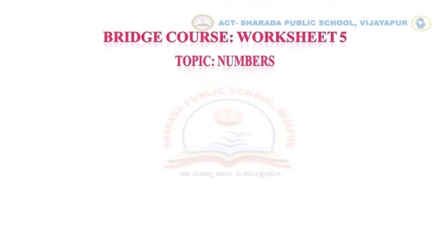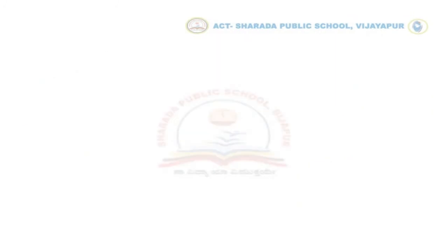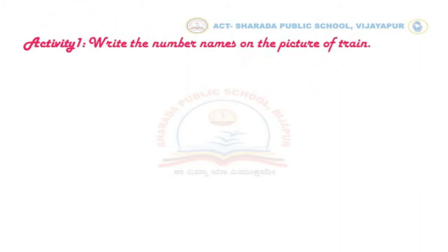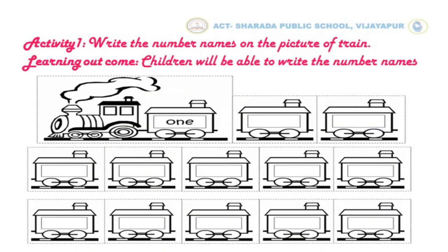Now let us begin with bridge course worksheet number 5 on numbers. Activity 1 is: write the number names on the picture of the train. Through this activity, you will be able to write the number names.